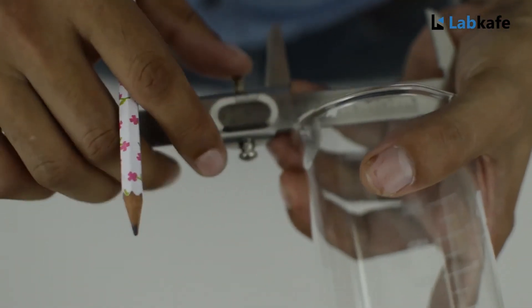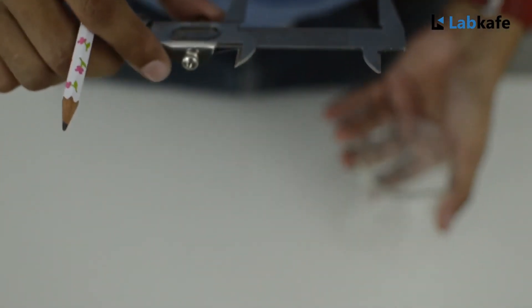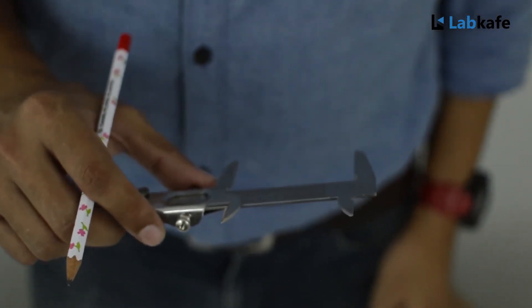Finally, we will put these records into the table and apply the zero correction, and we will calculate the average or mean diameter.